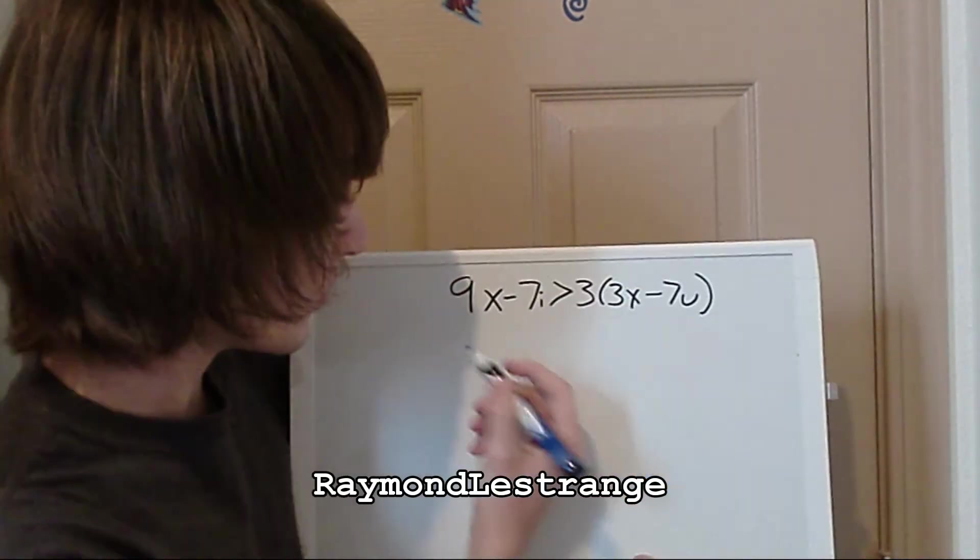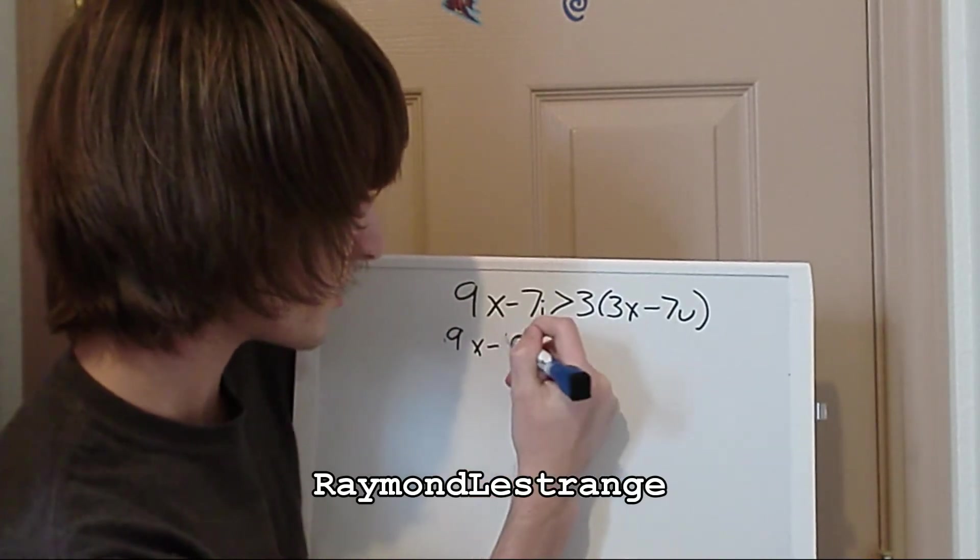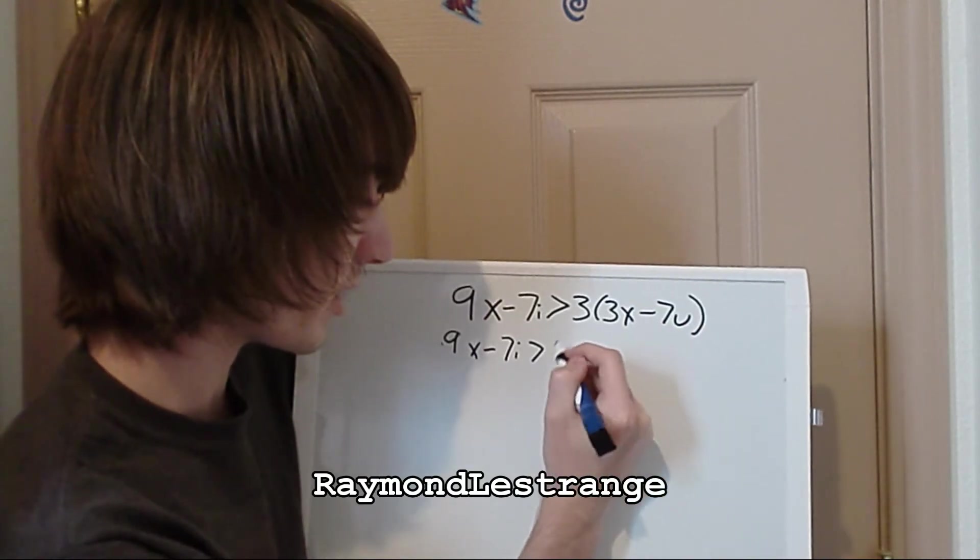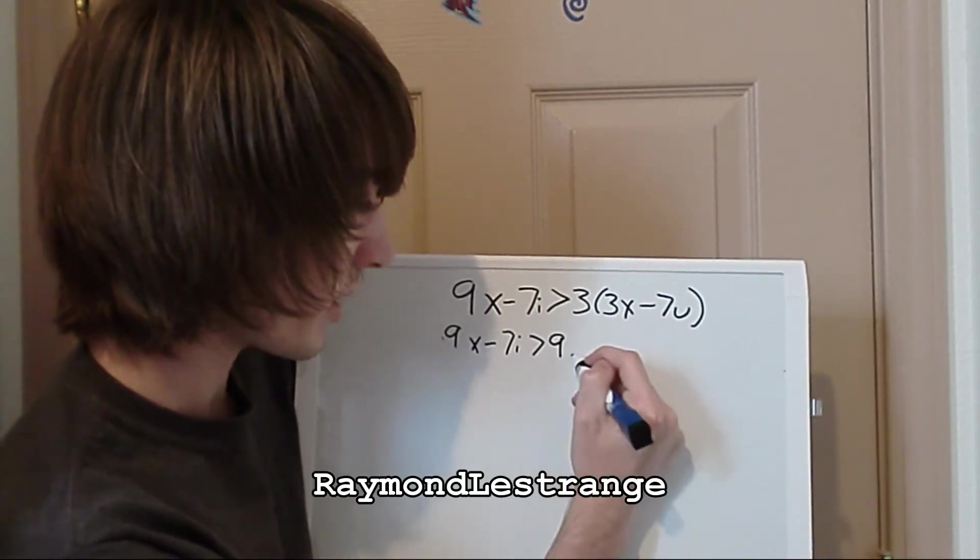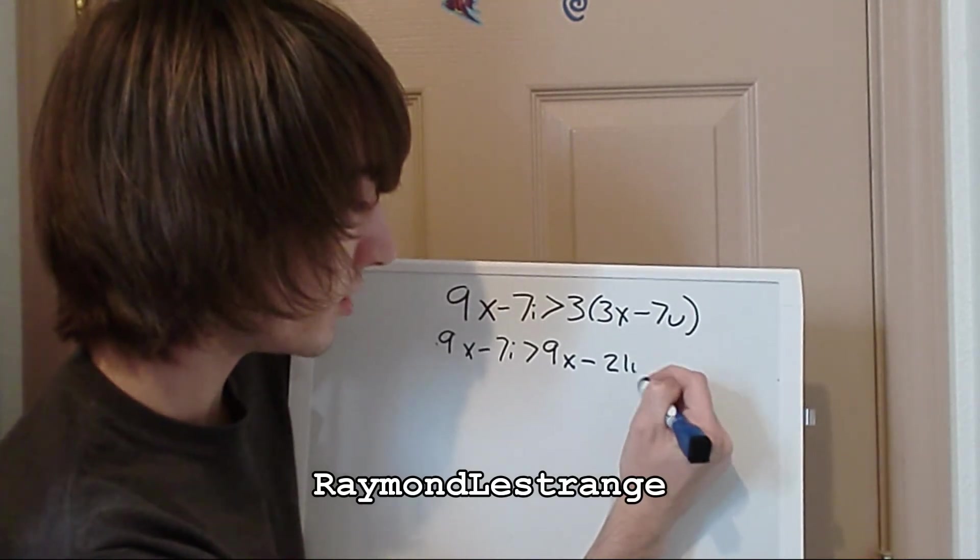So now how to solve this is you just bring this down. So 9x minus 7i is greater than and distribute this right here. So we have 9x minus 21u.